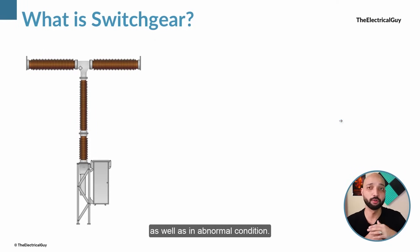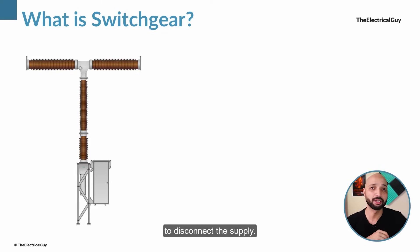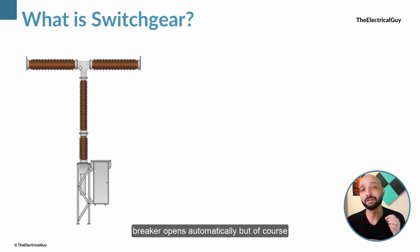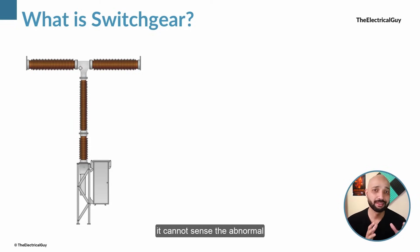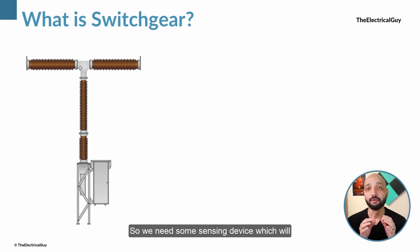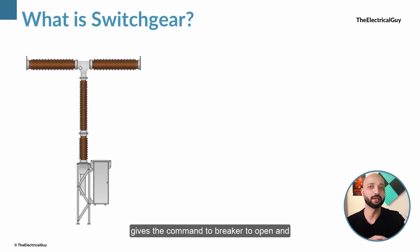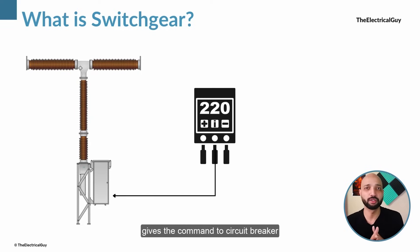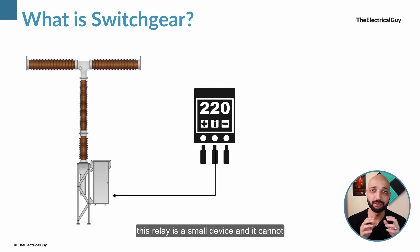You can take the example of a circuit breaker. This circuit breaker is used to operate the system in normal conditions as well as in abnormal conditions. Let's say you need to carry out maintenance on the system — this can be operated to disconnect the supply. Plus, the circuit breaker is capable of opening the circuit in case of an abnormal condition like a short circuit. In such abnormal conditions the circuit breaker opens automatically, but of course it cannot sense the abnormal condition on its own. So we need a sensing device which will sense the abnormal condition and give the command to the breaker to open — and that sensing device is nothing but the relay.